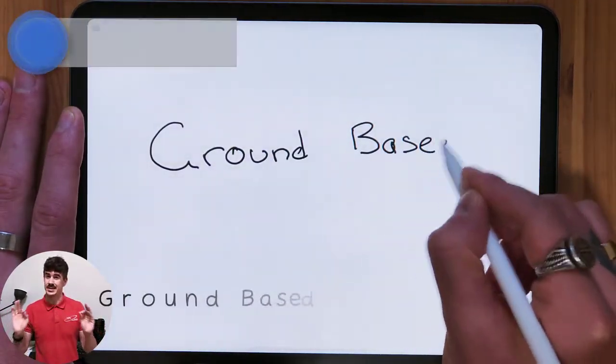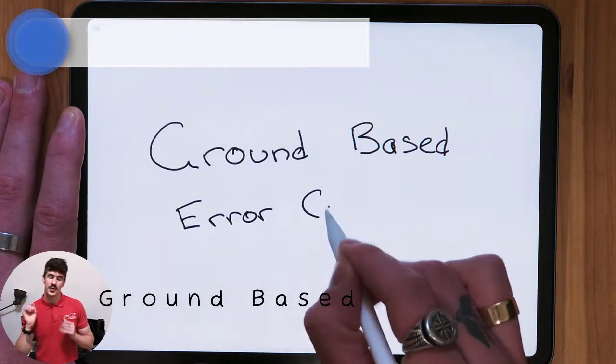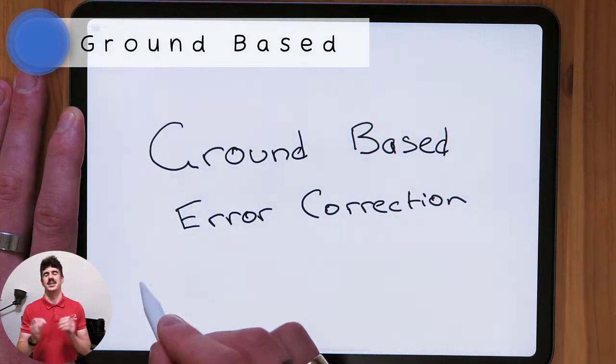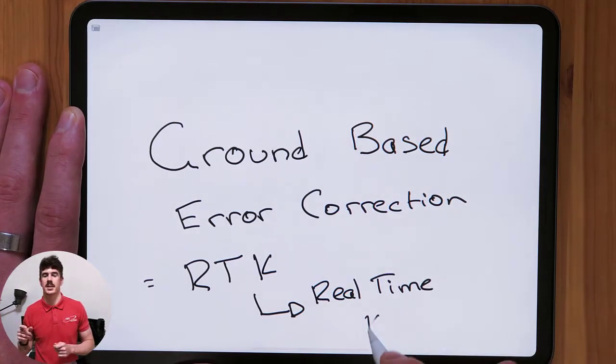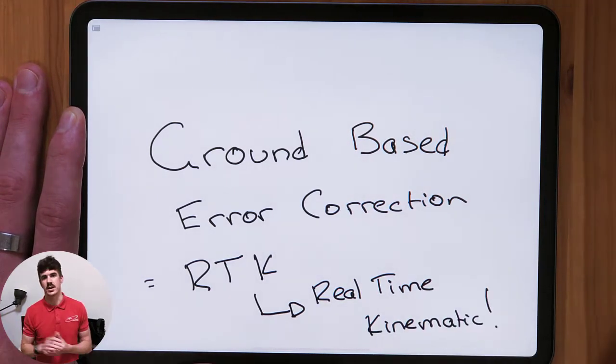Now, this stuff is cool. So ground-based error correction is synonymous with RTK. RTK stands for real time kinematic, which indicates how the signal works itself. Today, RTK or ground-based error correction is the most accurate correction signal in precision farming and in agriculture today and also construction.